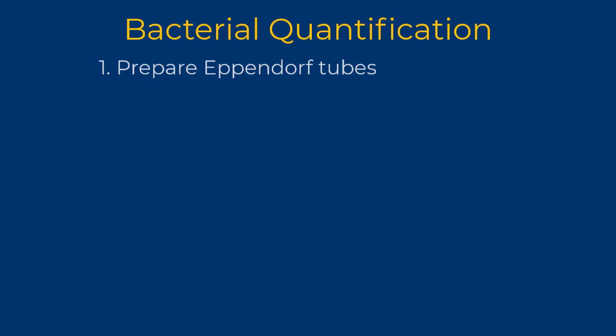To do this, you will first add TSB medium to Eppendorf tubes, then collect a sample and put it in the first tube.